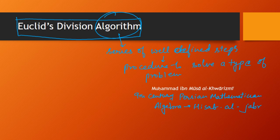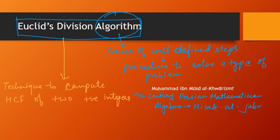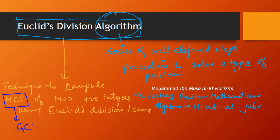What is the meaning of the term Euclid's Division Algorithm? Euclid's Division Algorithm is a technique to compute the HCF of two positive integers using Euclid's Division Lemma. Here, HCF is also sometimes called GCD — greatest common divisor or highest common factor.